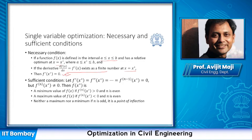The first derivative being zero indicates the slope is zero, but it does not tell us whether the point is a maximum, minimum, or inflection point. For that reason, we need to look into the sufficient condition. In the sufficient condition, if we take consecutive derivatives until we reach a non-zero value, we can determine a minimum if the nth derivative order is even and its value is greater than zero, a maximum if even and less than zero, or a point of inflection if n is odd.